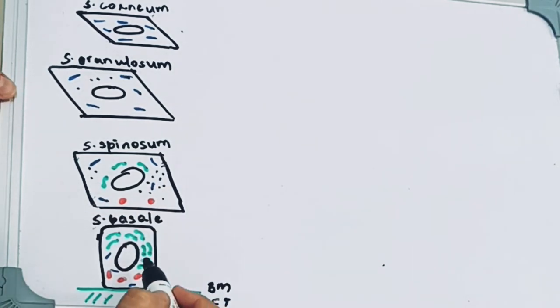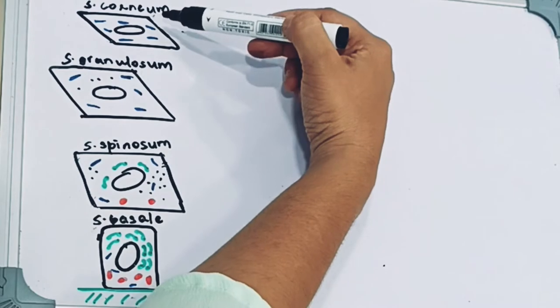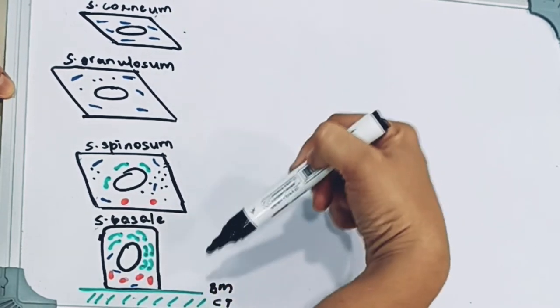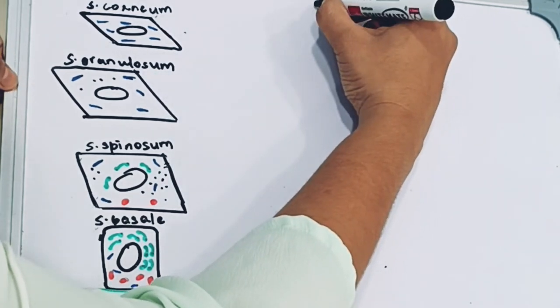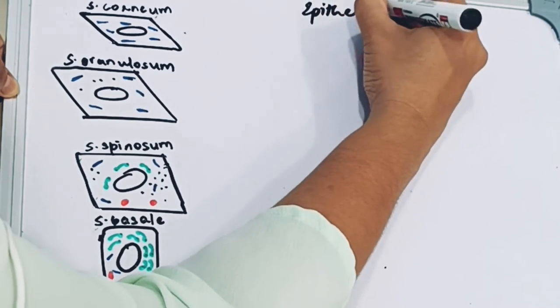Stratum basale: these are cylindrical or cuboidal cells. The basal cells are present at the base, hence the name basale. They are separated from the underlying connective tissue by a basement membrane. These cells have the ability to divide. As they divide into two cells, the older cell is pushed into the top layers, traversing from the basale to the stratum corneum. This whole journey takes around a month and is called the epithelial cell turnover time.